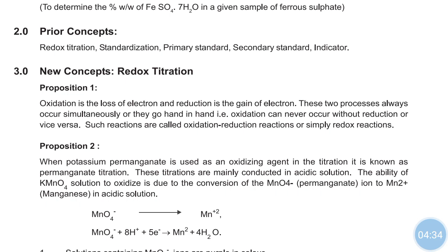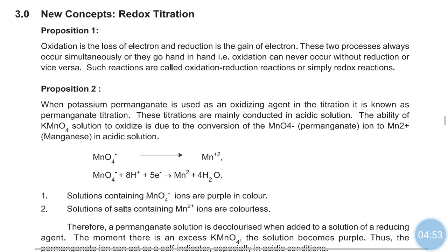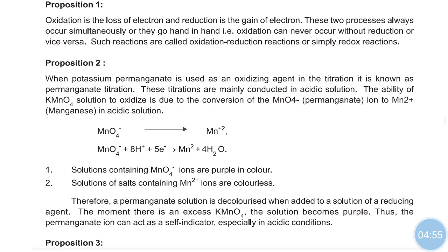In acidic medium, the KMnO4 solution is oxidized due to the conversion of MnO4 minus, the permanganate ion which is purple in color, to Mn2+ — that is, manganese ion in acidic solution — which is colorless.